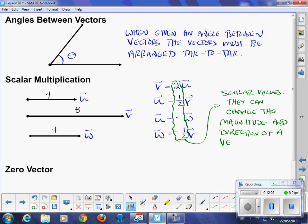Those scalars, those numbers that are appearing in front of the vectors are what we call scalar values. Those are scalar values. And, they can change the magnitude and direction of a vector.